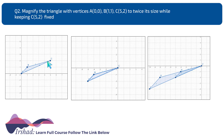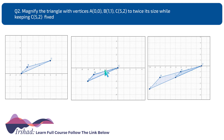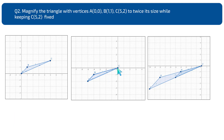First, we will translate the object so that C comes to the origin. We translate minus 5 units on the x-axis and minus 2 units on the y-axis, because the coordinates of C are (5,2). After this translation, C will be at the origin.